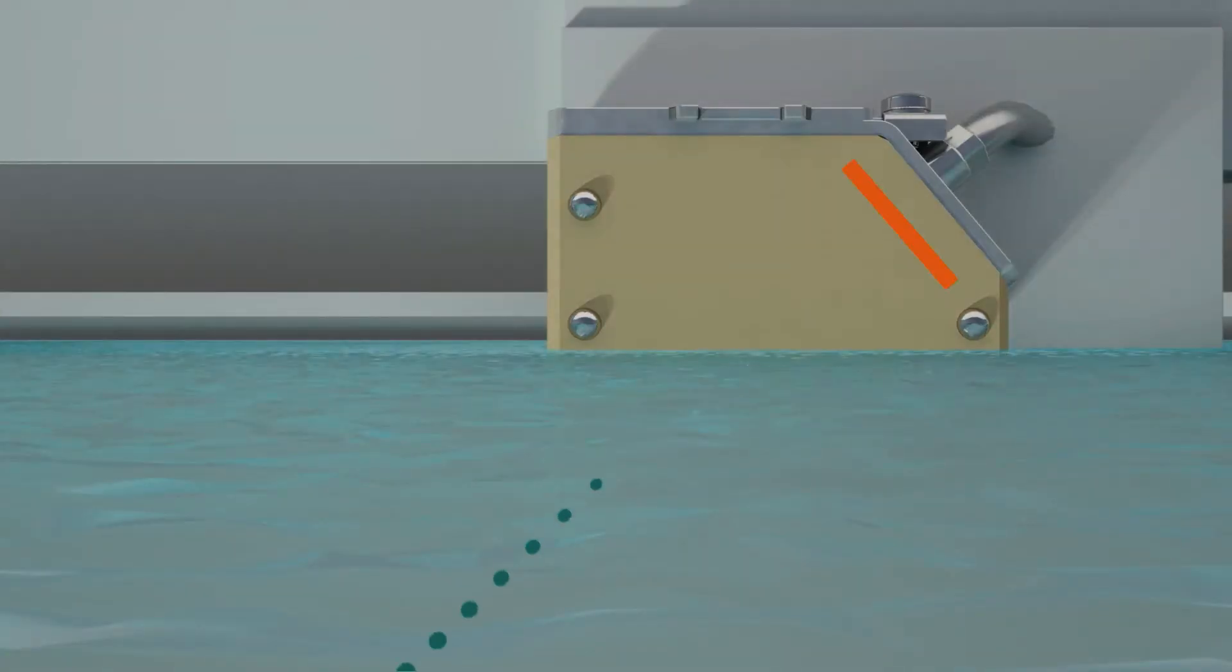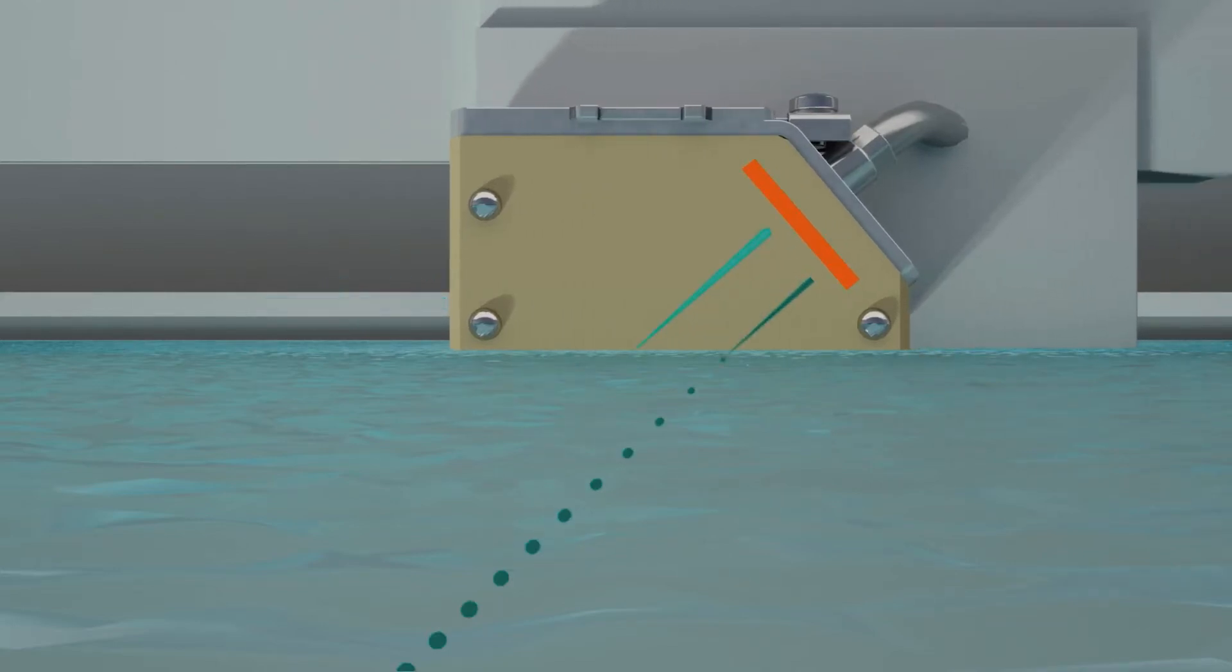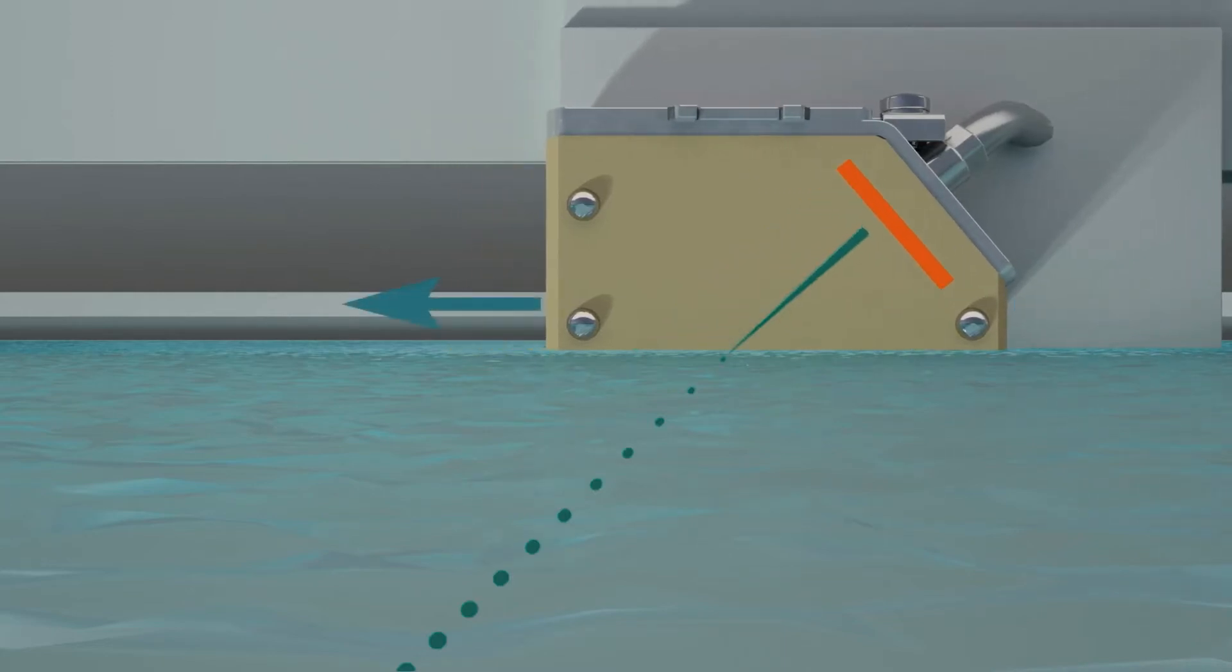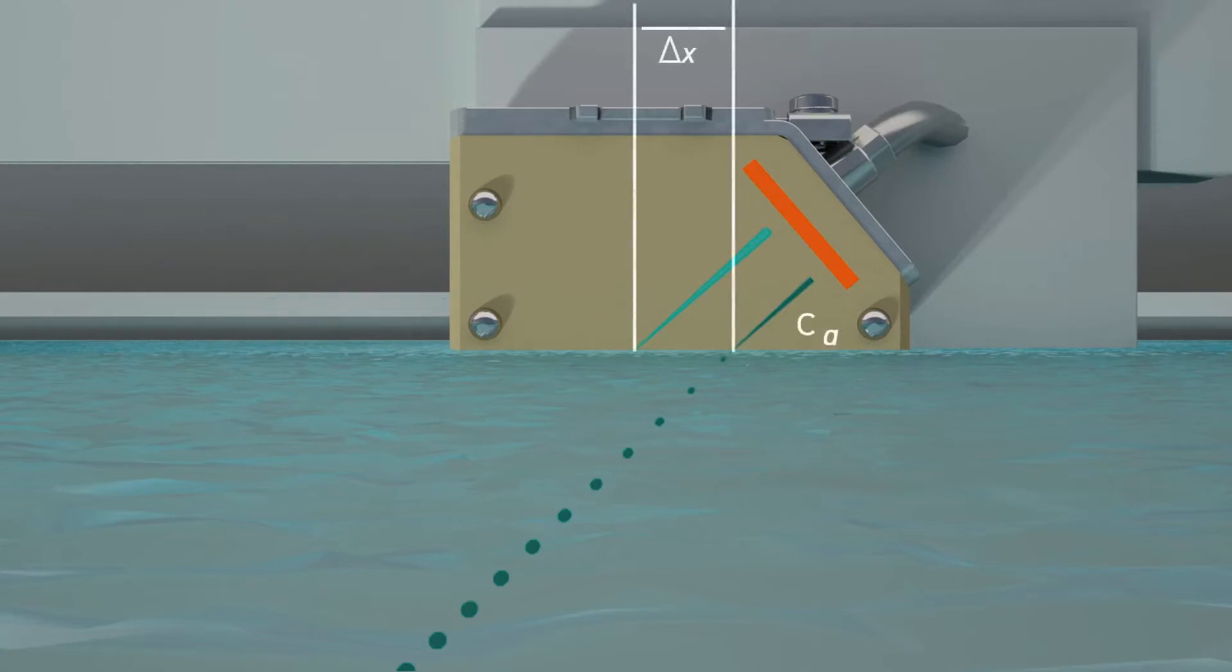During the direct transducer calibration patented by Flexum and named aperture calibration, the spatial signal shift, instead of being induced by flow, is caused by moving the transducer itself by delta x.